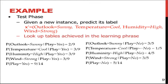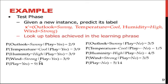In the testing phase, we are given a particular instance: outlook=sunny, temperature=cool, humidity=high, wind=strong. We need to estimate the class label for this instance. From the learning phase tables, we retrieve: P(outlook=sunny | play=yes) = 2/9, P(outlook=sunny | play=no) = 3/5. Similarly we find values for temperature, humidity, and wind for both class yes and class no.